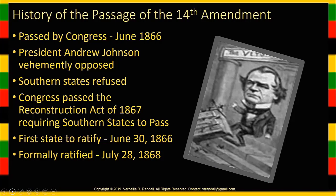Southern states refused. They said, you may have won the war, but you can't make us turn them — talking about Black people — into anything. All of the Southern states refused, with the exception of Tennessee. Tennessee was the only state that didn't refuse to ratify the 14th Amendment. So Congress had to go back and pass the Reconstruction Act of 1867, basically requiring Southern states to ratify the Reconstruction Amendments in order to be readmitted to the union.